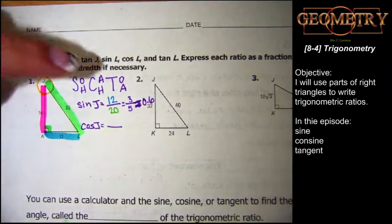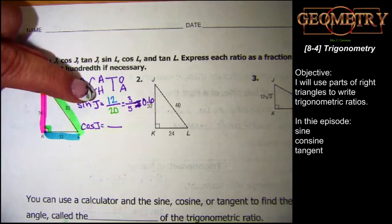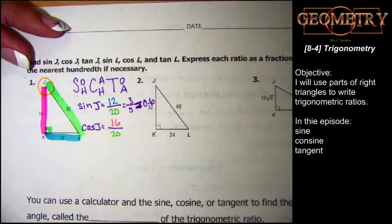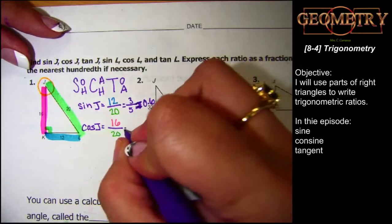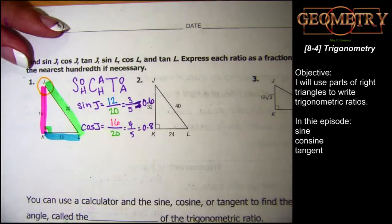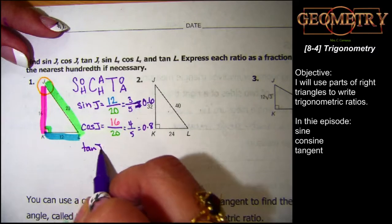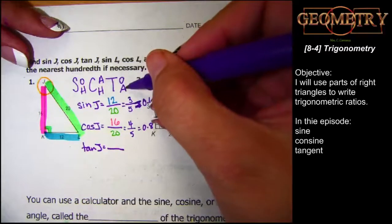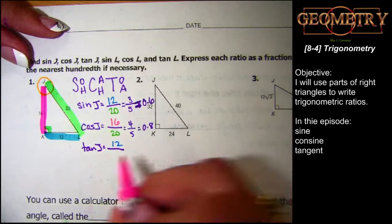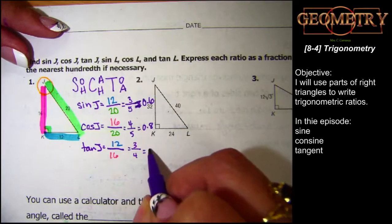Cosine of J is adjacent over hypotenuse. The side adjacent to J is 16, over the hypotenuse of 20. That reduces to 4/5, which as a decimal is 0.8. Tangent of J is opposite over adjacent: 12 over 16 reduces to 3/4, which as a decimal is 0.75.